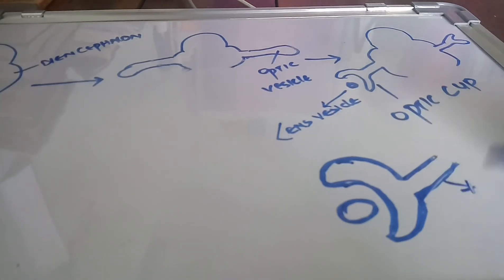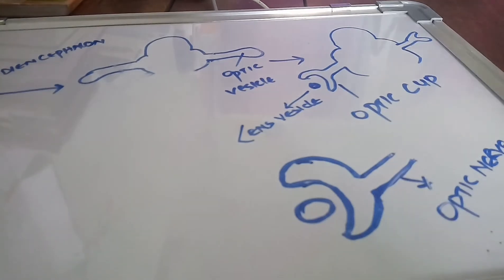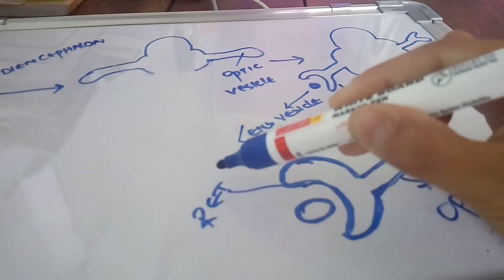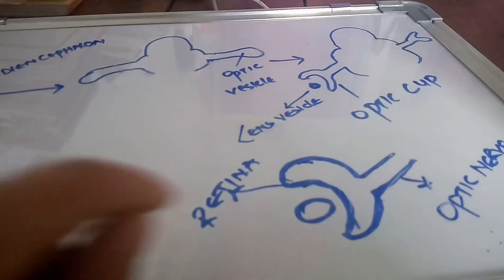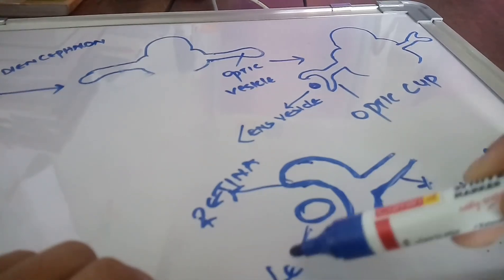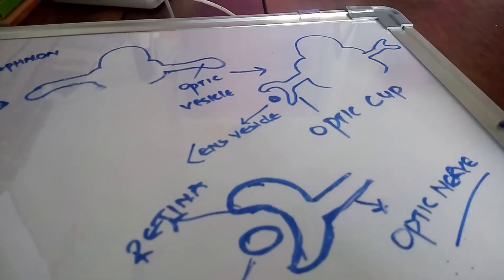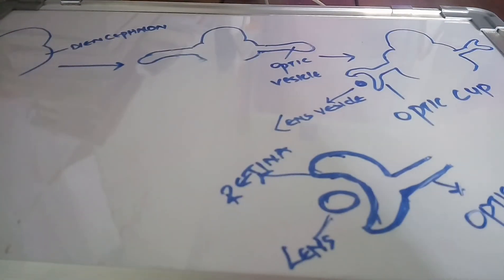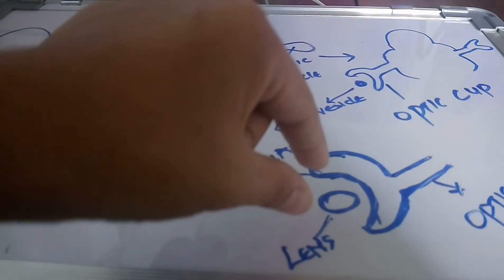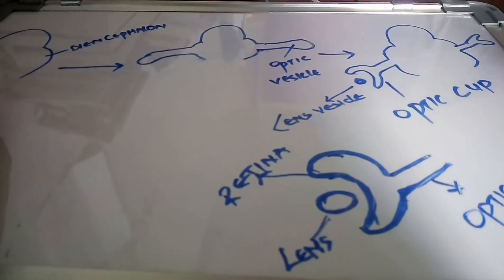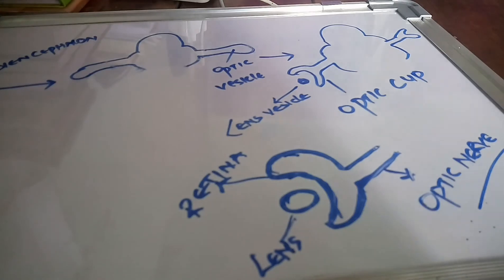The optic stalk develops into the optic nerve. To summarize: the optic cup develops into the retina — both inner and outer layers — the lens vesicles develop into the lens, and the optic stalk develops into the optic nerve. This is how the eye develops from the diencephalon.